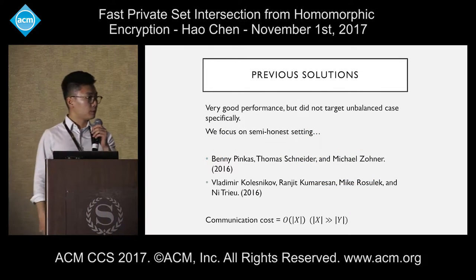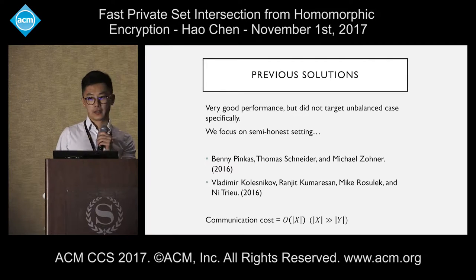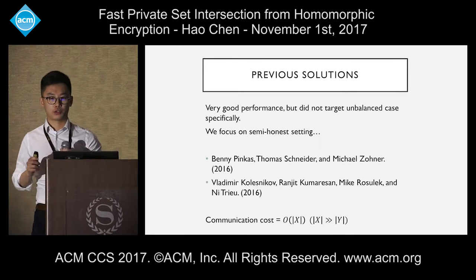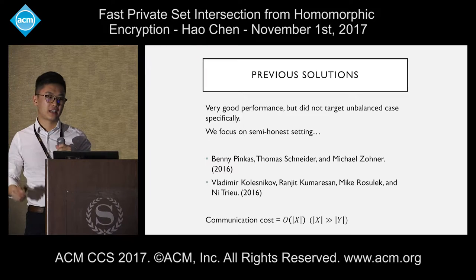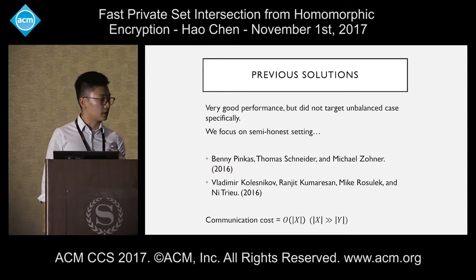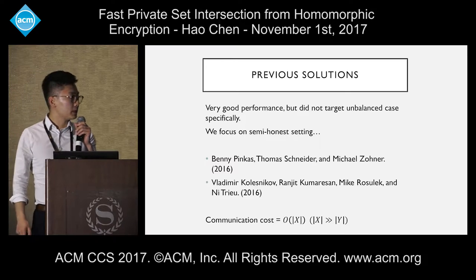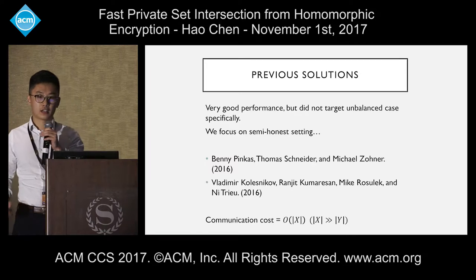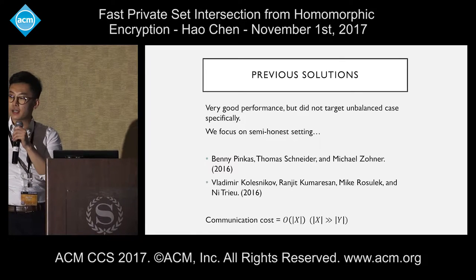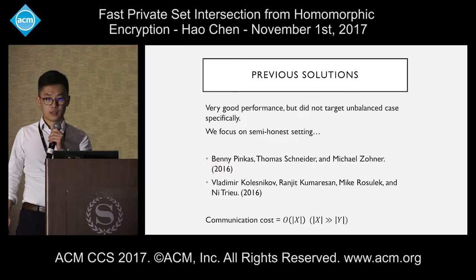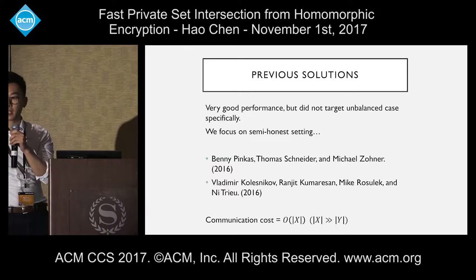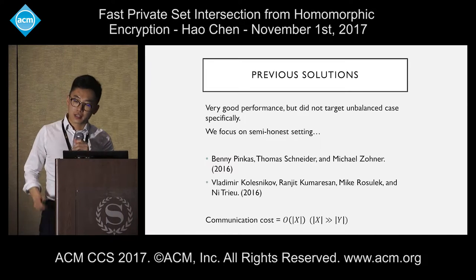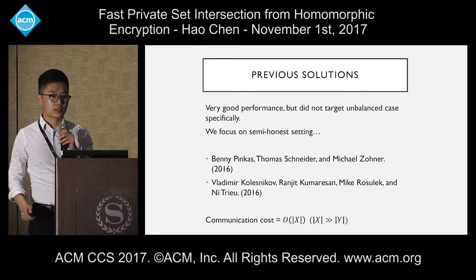Previous solutions have very good performance, but they don't actually target specifically this unbalanced case. Usually in previous work, both sides had roughly sets of the same size. There are two state-of-the-art works by Pinkas et al. in 2016, and Kolesnikov et al. in 2016. These achieve very fast performance in the semi-honest setting, but note that the communication cost is linear in the sender set, which we assume is much bigger than the receiver set. So this is not optimal, and we want to improve this.